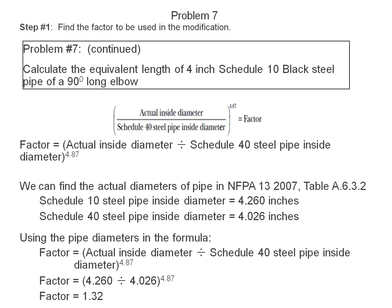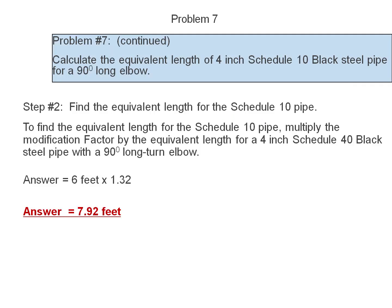The solution to problem number 7 can be found by using Table A.6.3.2. Schedule 10 steel pipe inside diameter is equal to 4.260 inches. Schedule 40 steel pipe inside diameter is equal to 4.026 inches. Using the pipe diameters in the formula to find the factor, it's equal to actual inside diameter divided by Schedule 40 steel pipe inside diameter to the 4.87 power. We divide 4.260 by 4.026 to the 4.87 power and our factor is 1.32.